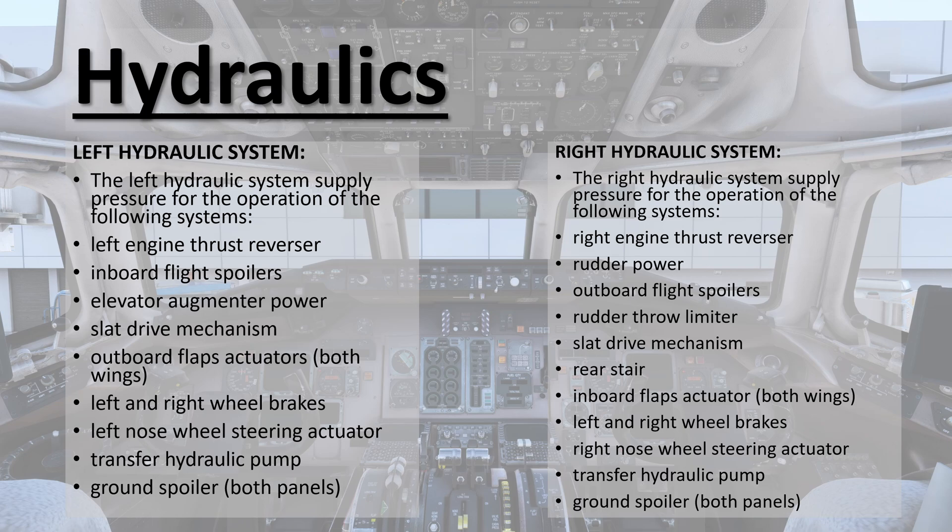The MD-82 has two independent hydraulic systems — left and right. Many services are controlled by either one, but some services like the left and right wheel brakes are served by both. If one system fails, those shared services operate at a reduced rate, since hydraulic fluid is only coming from one side, making actuation slower than if both systems were active.